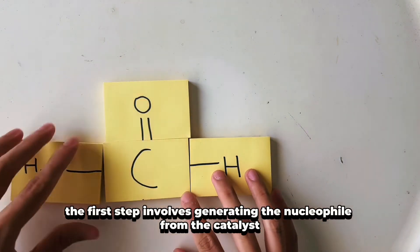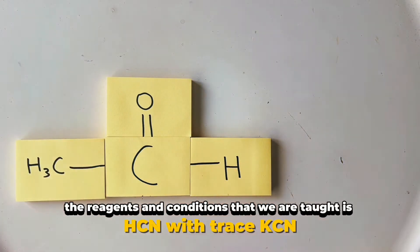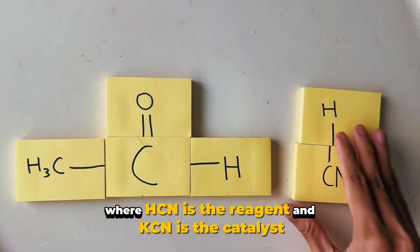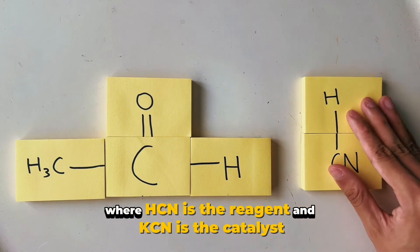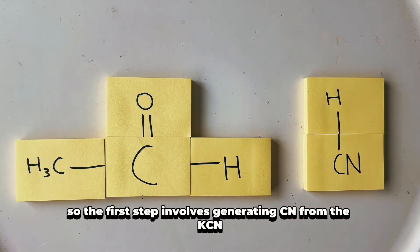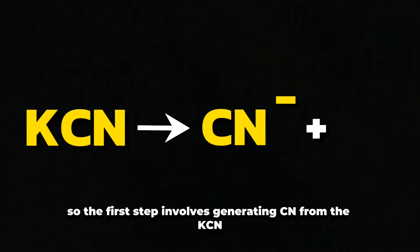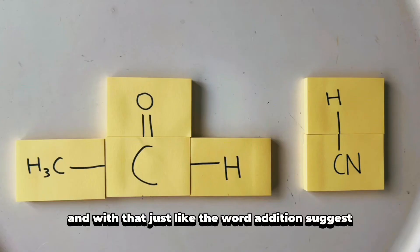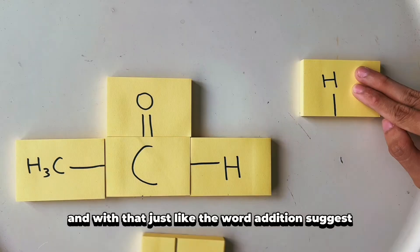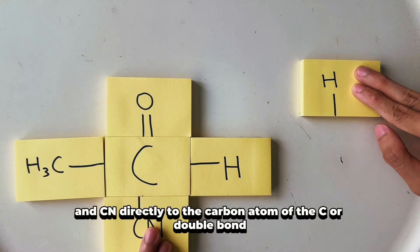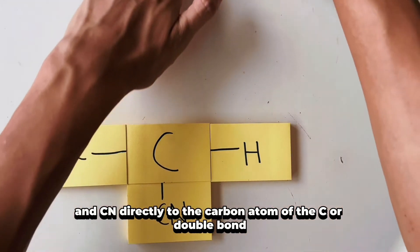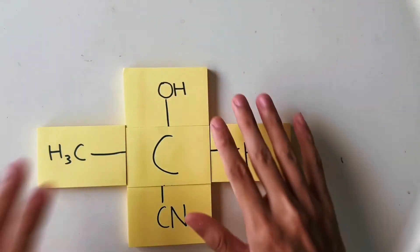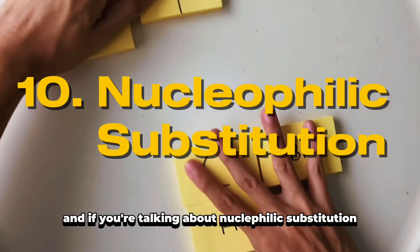On the other hand, in a nucleophilic addition reaction, the first step involves generating the nucleophile from the catalyst. The reagents and conditions that we are taught is HCN with trace KCN, where HCN is the reagent and KCN is the catalyst. So the first step involves generating CN- from the KCN. Just like the word addition suggests, we literally add H to the O and CN directly to the carbon atom of the C=O double bond.